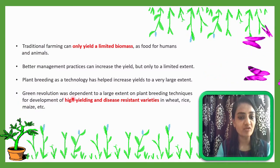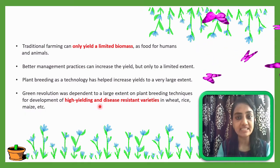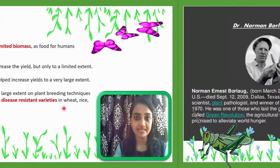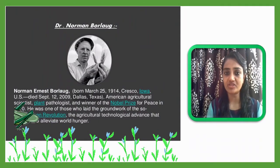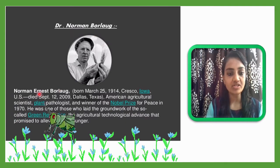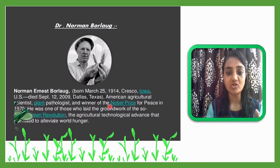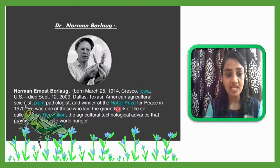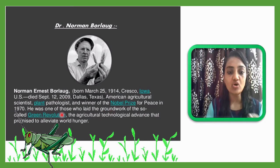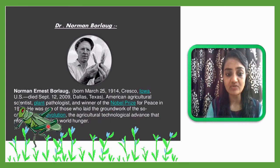The Green Revolution depended to a large extent on plant breeding techniques for the development of high-yielding and disease-resistant varieties in wheat, rice, and maize. The person whose contribution to the Green Revolution was very important was Dr. Norman Borlaug, an American agricultural scientist and plant pathologist, who won the Nobel Prize for Peace in 1970. He laid the groundwork for the so-called Green Revolution and the agricultural technological advances that promised to alleviate world hunger.